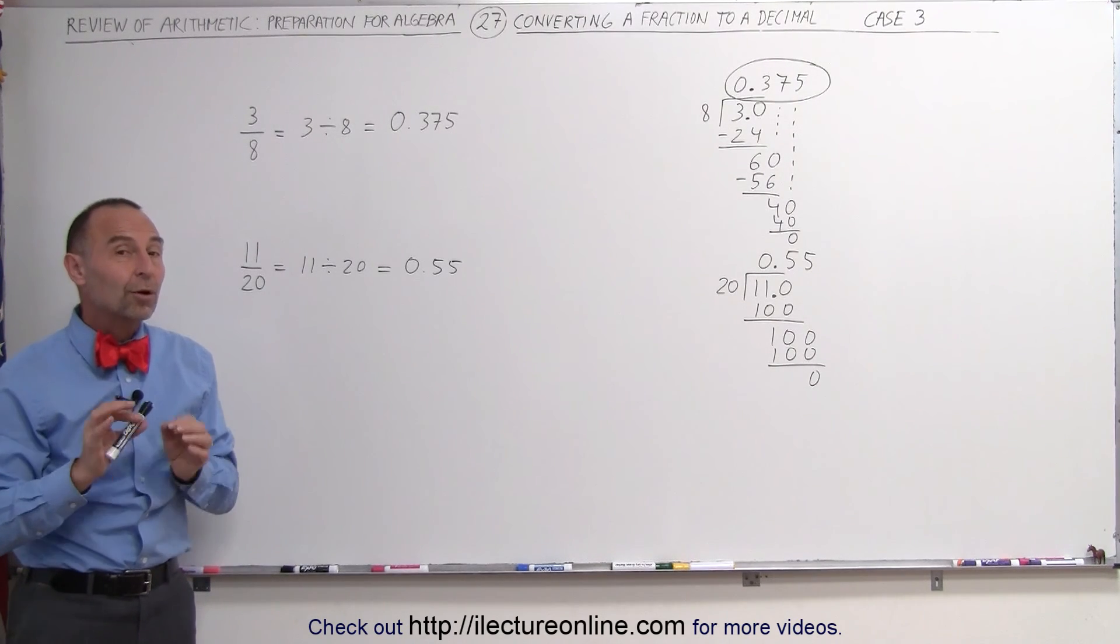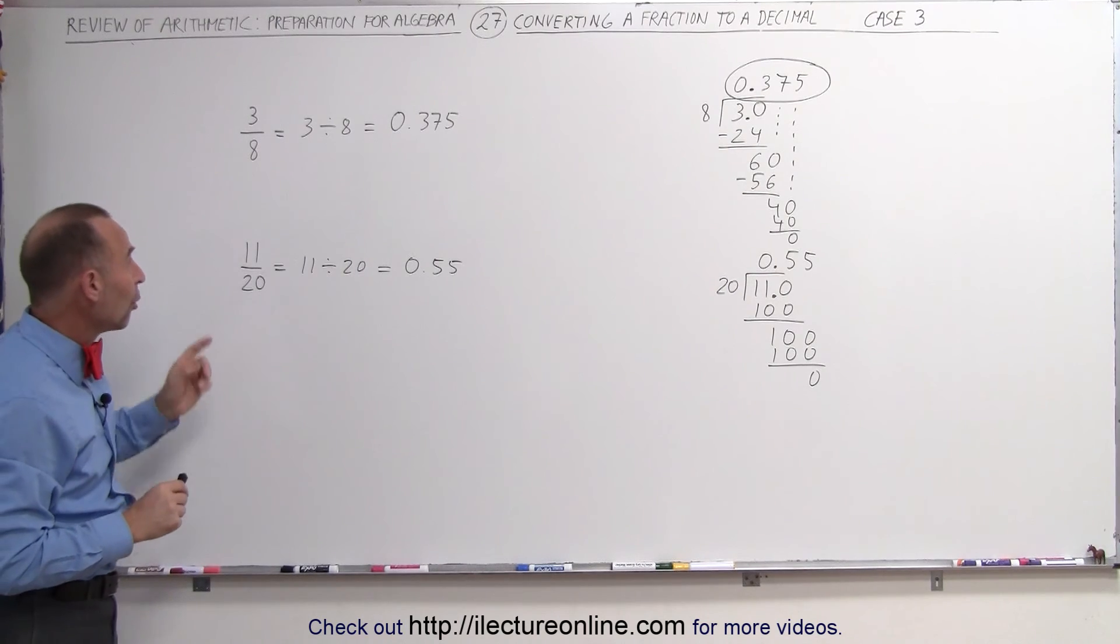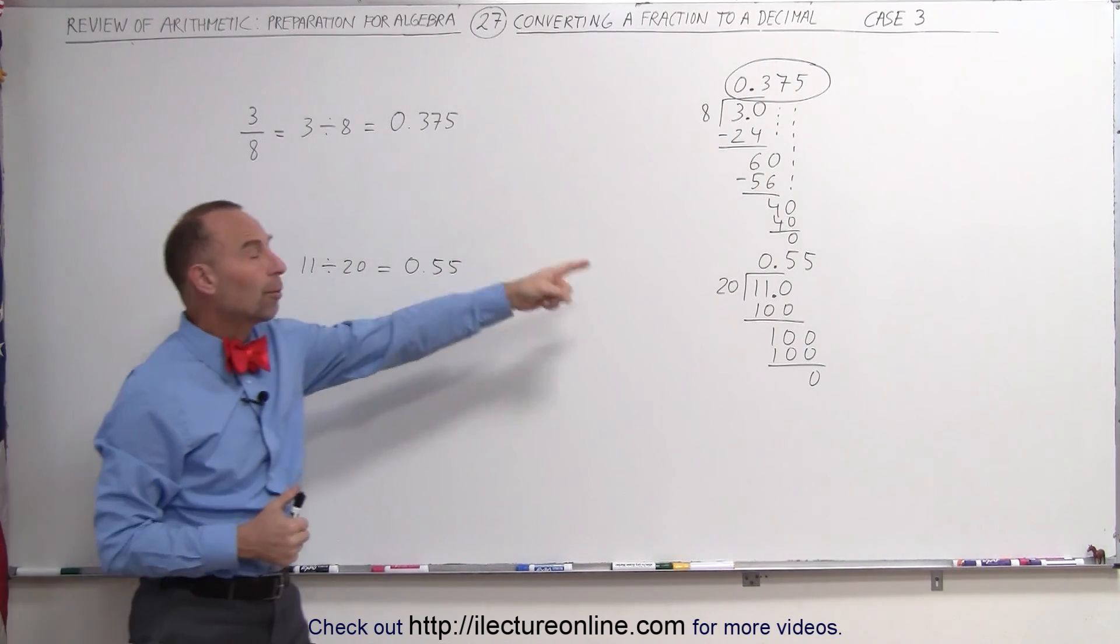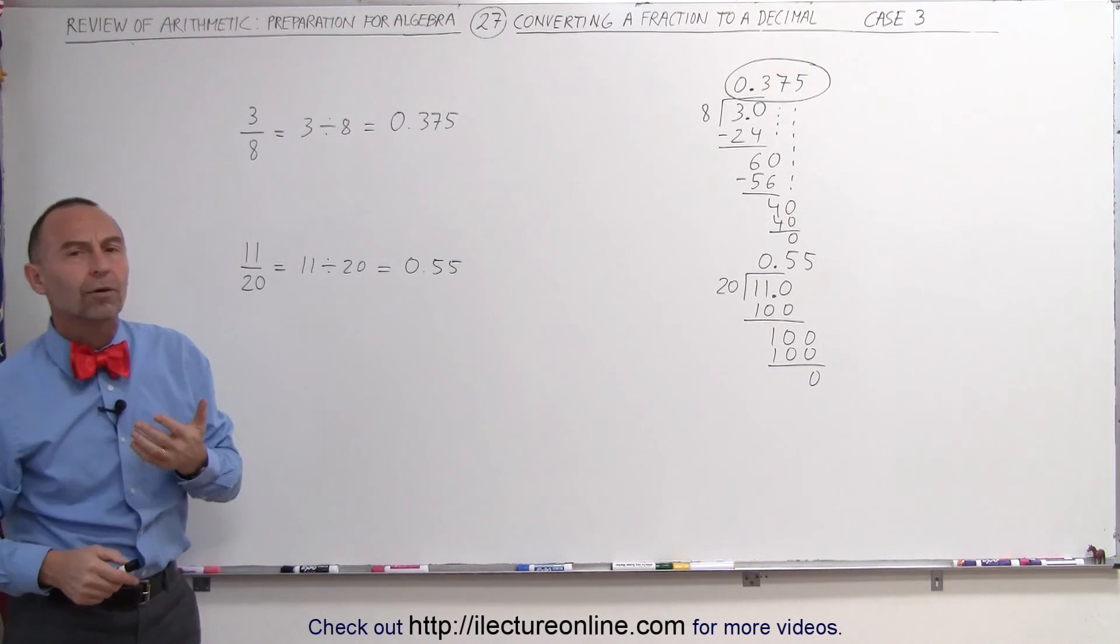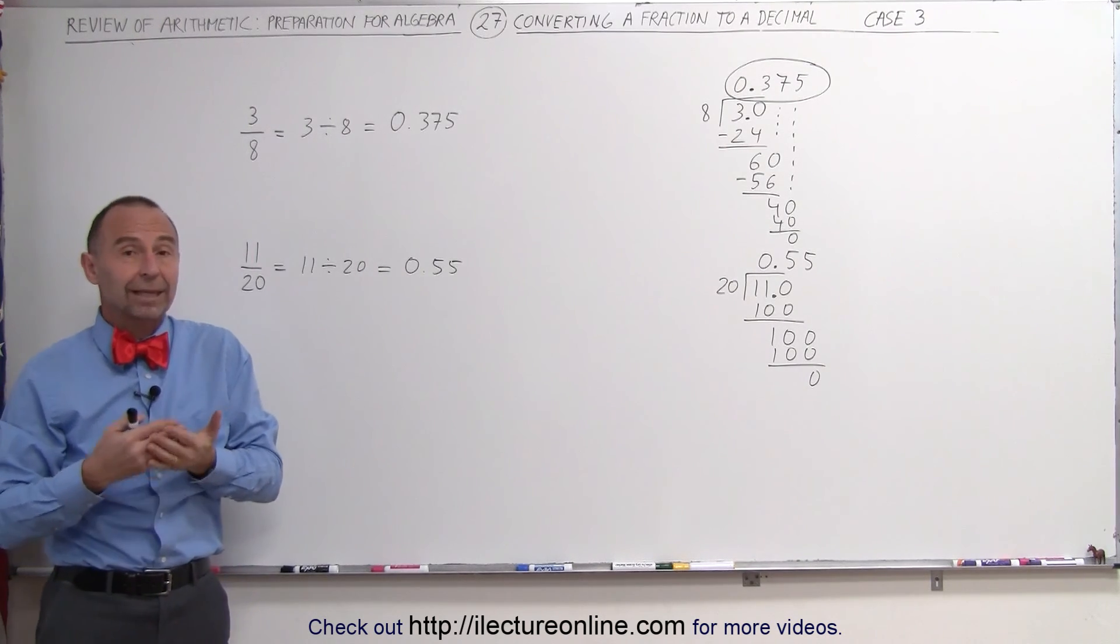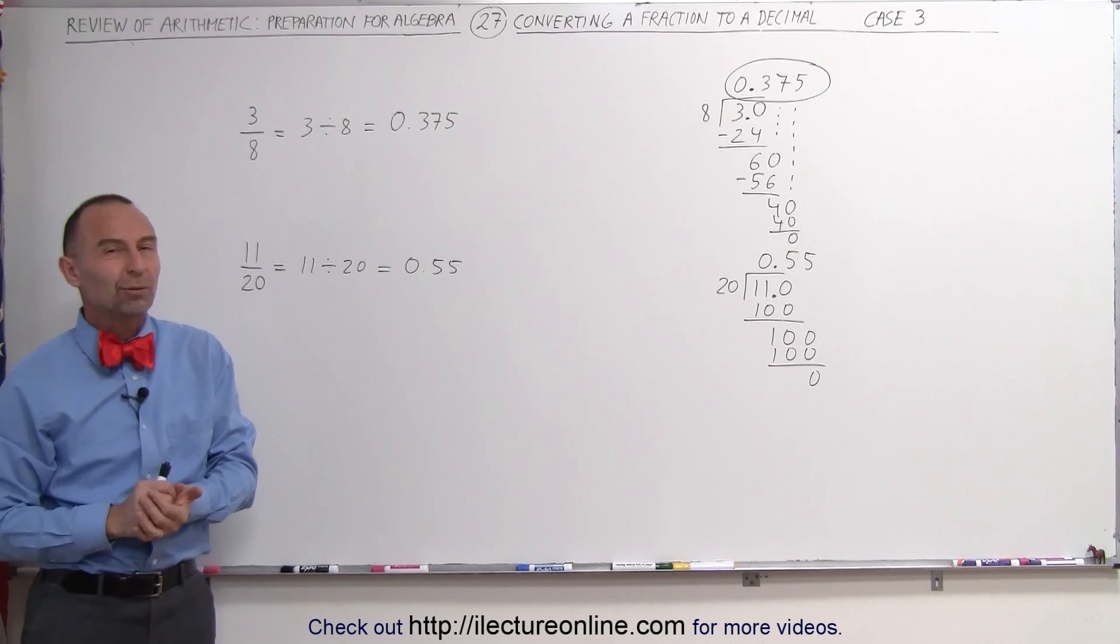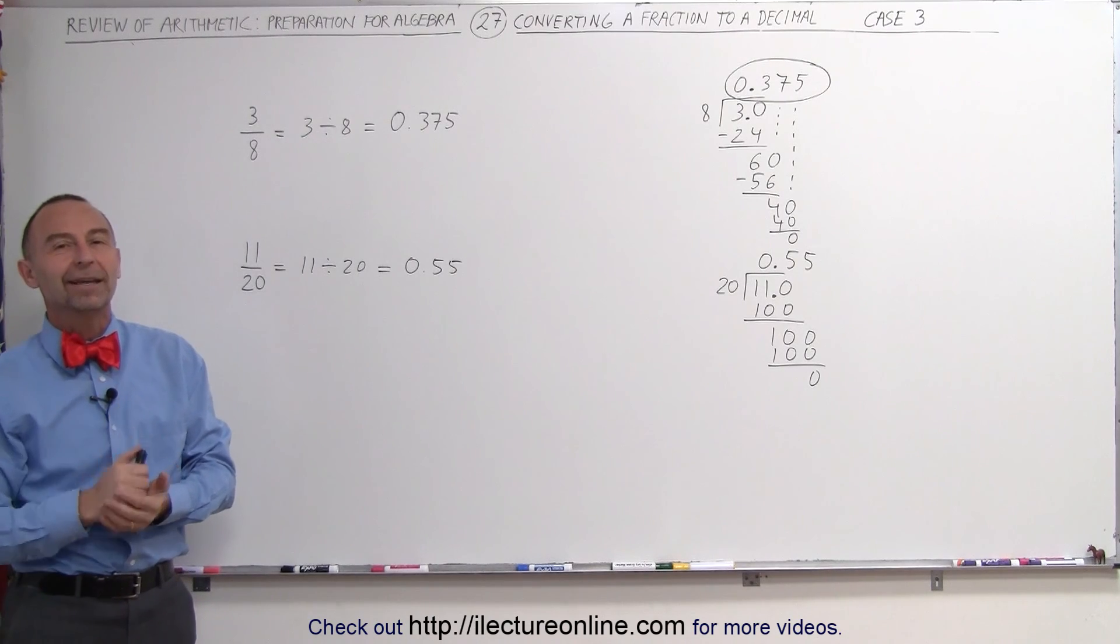On the next video, we're going to show examples where we can't get a 0 remainder. Then how do you turn a fraction into a decimal when you never get a 0 remainder? Well, stay tuned and we'll show you how to do that. That will be case 4.